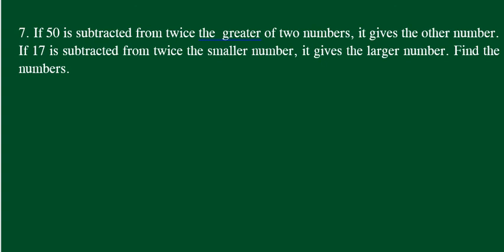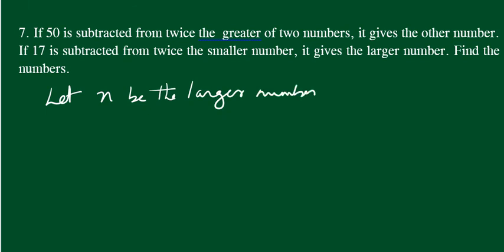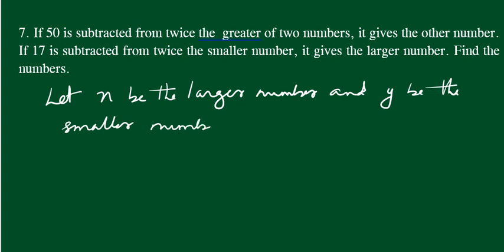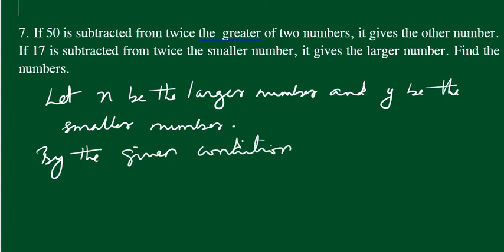The next problem: if you subtract a number from twice the greater of two numbers, it gives the other number. If you subtract from twice the smaller number, it gives the larger number. Let x be the larger number and y be the smaller number.